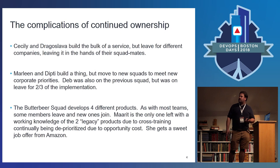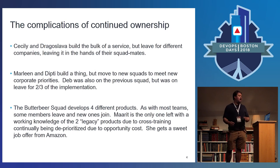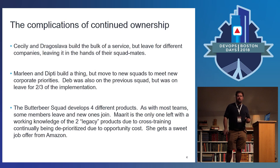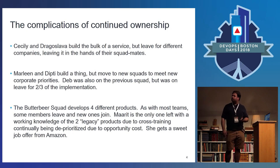You've got another team — two members build a thing, then move on to new squads to meet new corporate priorities. There's a restructure, a re-org, a lateral move. There's a third teammate who was there but was on leave for part of it. Who's responsible for that service at that point? You're in a bind.